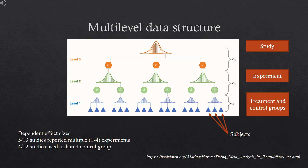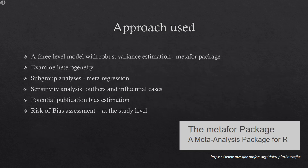The data extracted for the meta-analysis had a multi-level structure, as five studies reported up to four experiments, while several experiments were conducted with the same control group. To account for the likely correlation of effect sizes, we built a three-level model with robust variance estimation and went through the standard meta-analysis steps, such as examination of heterogeneity, subgroup and sensitivity analysis, estimation of potential publication bias, and risk of bias assessment.